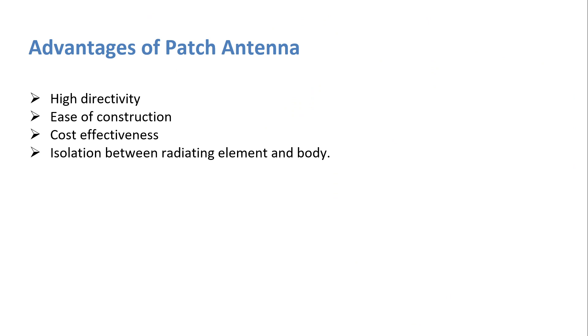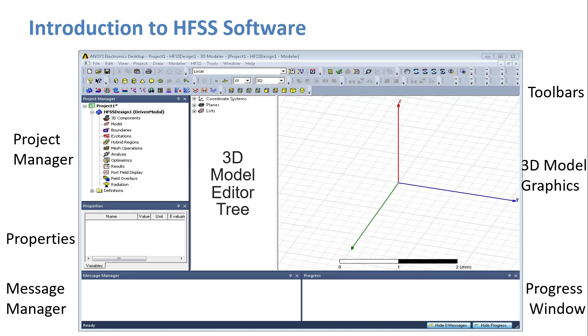Advantages of patch antenna: high reactivity, ease of construction, cost effectiveness, isolation between radiating element and body. We have used HFSS software to simulate the antenna before implementing its hardware. So, the layout looks like this.